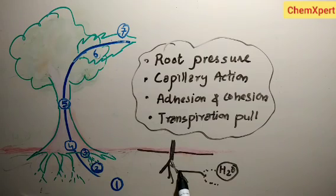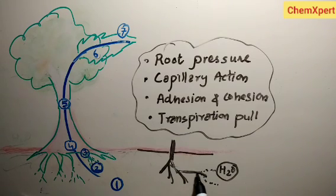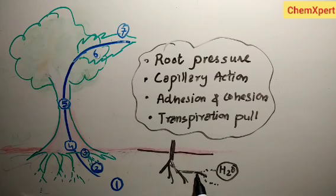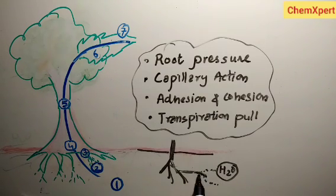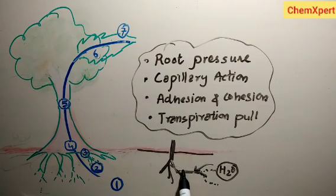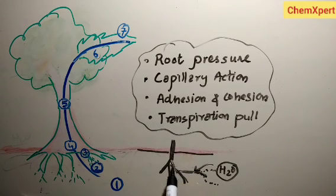In roots, there is a different concentration of ions inside the roots versus outside. Because of this difference in concentration, osmosis takes place — the movement of solvent through the semi-permeable membrane. Through osmosis, water enters the root hairs. Because of this concentration gradient, water is pushed into the roots, creating root pressure, which pushes water into the roots and up to the stem part.